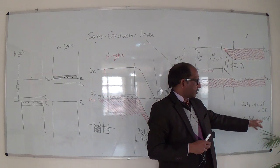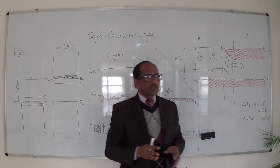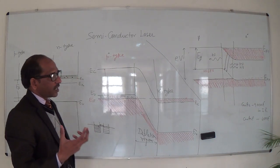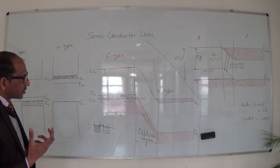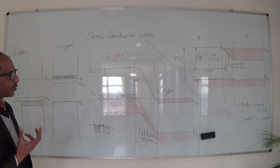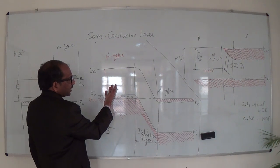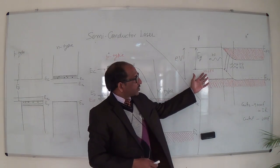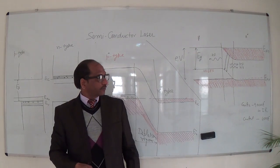Gallium arsenide phosphide (GaAsP) emits in the visible spectrum at a wavelength of 6500 Å. The basic and most important concept in semiconductor lasers is understanding the energy band diagram — if one can understand the energy band diagram, one can understand and explain how the semiconductor laser works.